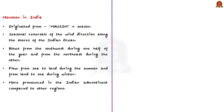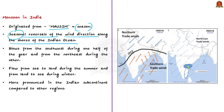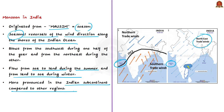The word monsoon is originated from the Arabic word 'mausam' which means season. It is the seasonal reversals of the wind direction along the shores of the Indian Ocean, especially in the Arabian Sea. It blows from the southwest during one half of the year and from the northeast during the other half. Monsoons are seasonal winds which reverse direction with the change of the season — a double system. They flow from the sea to land during summer and from land to sea during winter. The summer part is called South West monsoon and the winter part is called North East monsoon.